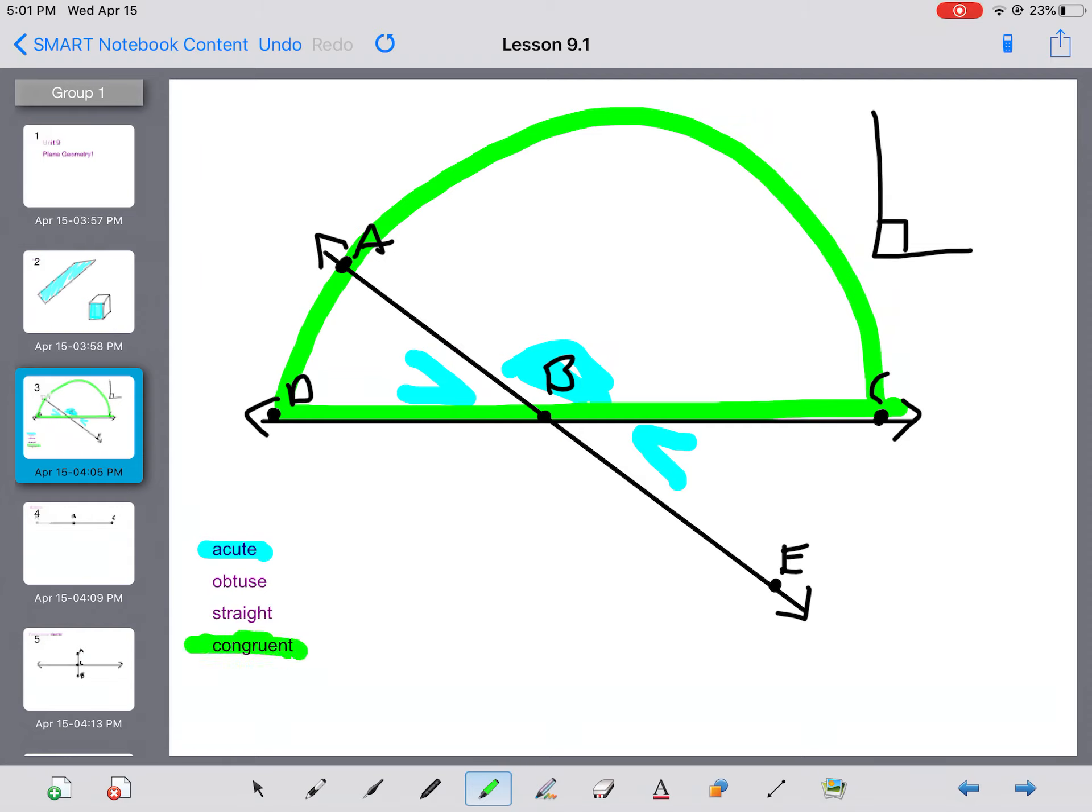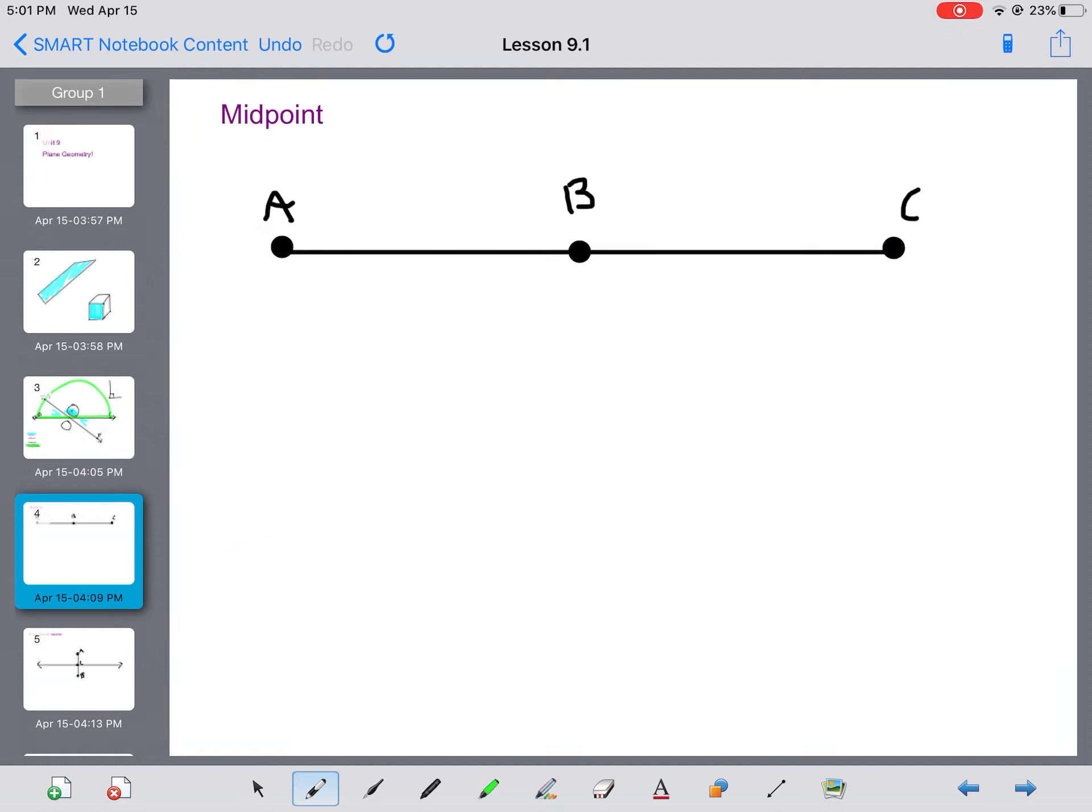Then we have congruent angles. Congruent angles are angles that are equal. So congruent just means equal. They're the same size. So in this case, our opposite angles are equal. Here I have two obtuse angles. They're opposite each other. They are equal. So congruent means equal.